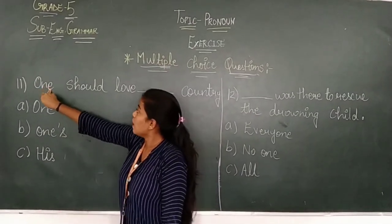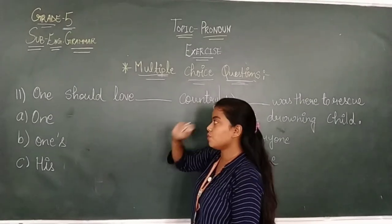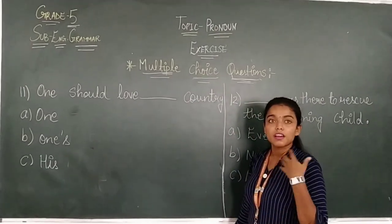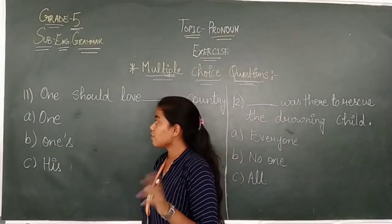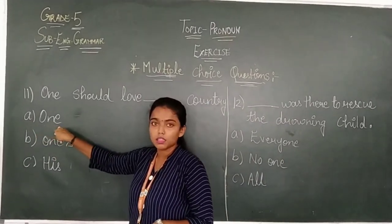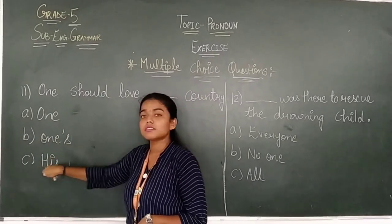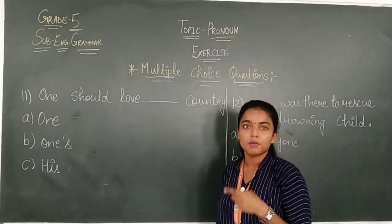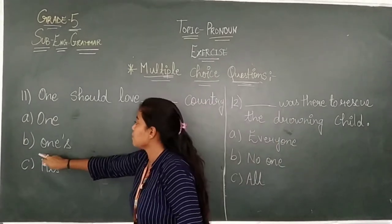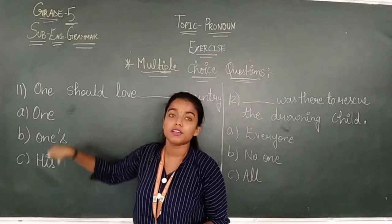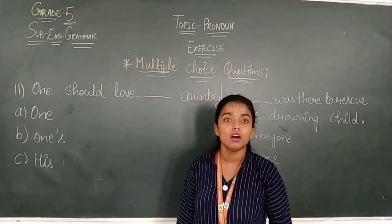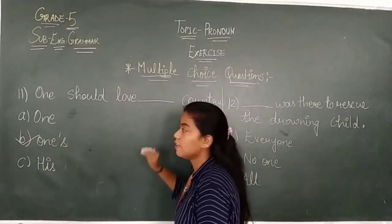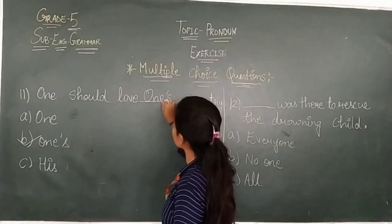Number 11. One should love dash country. Here the sentence is telling us about our country. So, we will see the options, the pronouns. A is one, second is once, C is his. So let's apply. One should love one country. We have to love one country, it's a whole country. So, what do we say? One should love one's country. Means, we should love our own country. So, which option will be applied? Which pronoun? Once. One should love one's country.